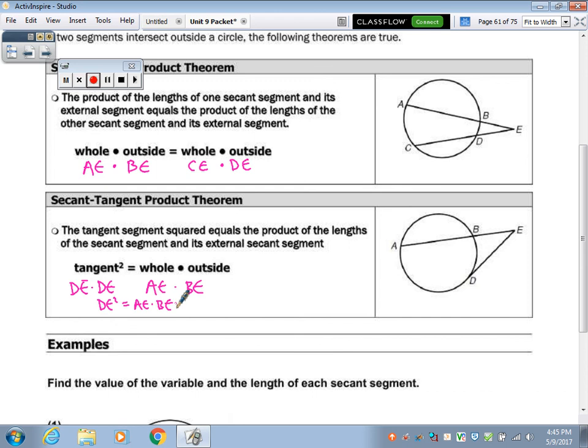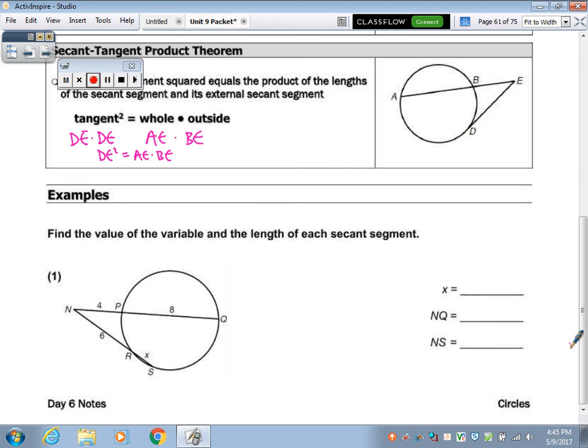Alright, I think an example will definitely help you here. Okay, so here's a picture. We have four pieces. You have the whole thing, okay, which is 12. So whole times the outside has to equal, and then this one you have whole, which is X plus 6, whole times outside, and the outside is 6. Okay, so this is whole times outside, and this is whole times outside.